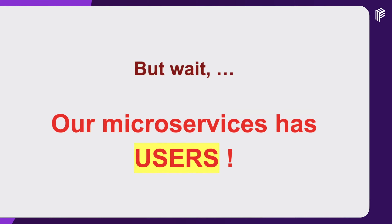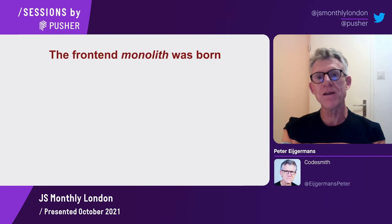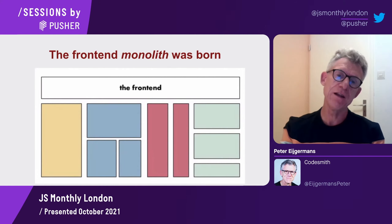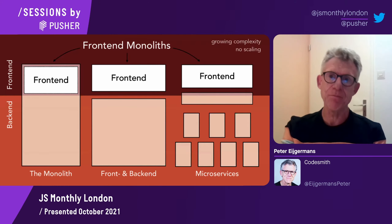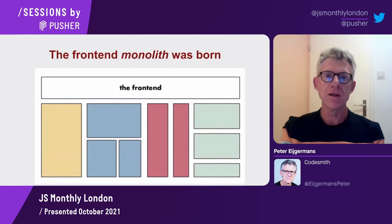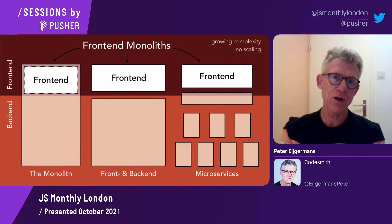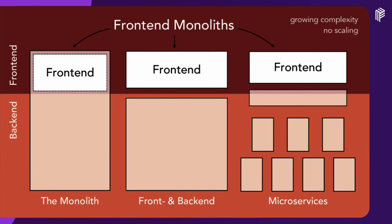Microservices are small, focused on one thing — autonomous. Ten years ago, Amazon announced they have hundreds of microservices running in production. A few months later, Netflix announced they have more than 500 microservices handling over 2 billion API requests daily. But they noticed that they had split up their backends into microservices, while they still had a frontend that was a monolith.